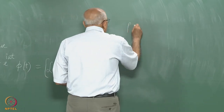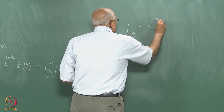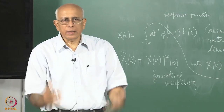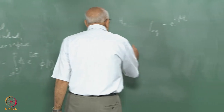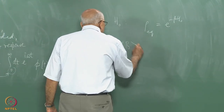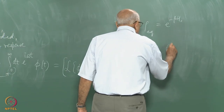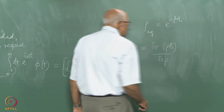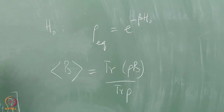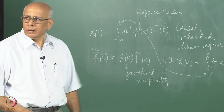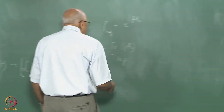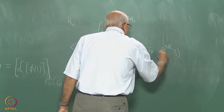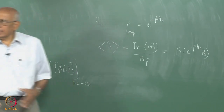The Hamiltonian is H₀ and the system is in thermal equilibrium. The density matrix ρ_eq equals e^{−βH₀}. For any observable B, the average value ⟨B⟩ is Tr(ρB)/Tr(ρ). We normalize so that Tr(ρ) = 1, so the denominator goes away. Then ⟨B⟩ equals Tr(e^{−βH₀} B), and we can compute its variance and so on.